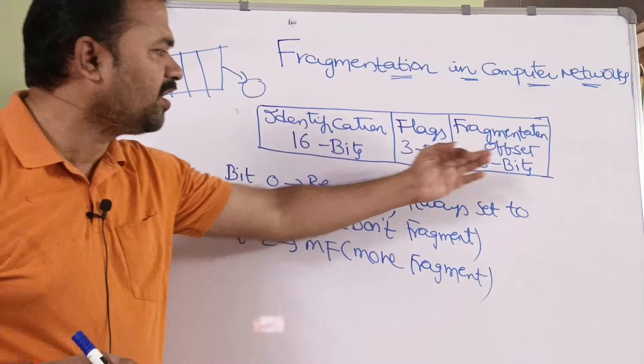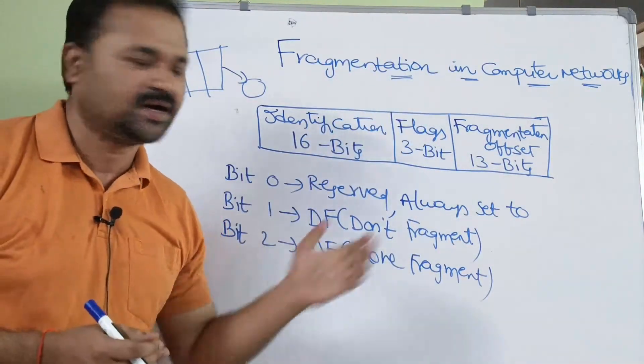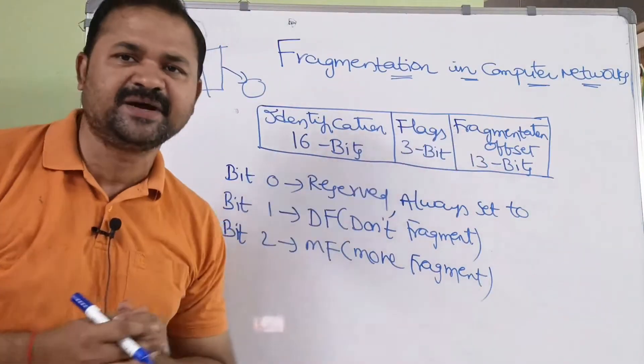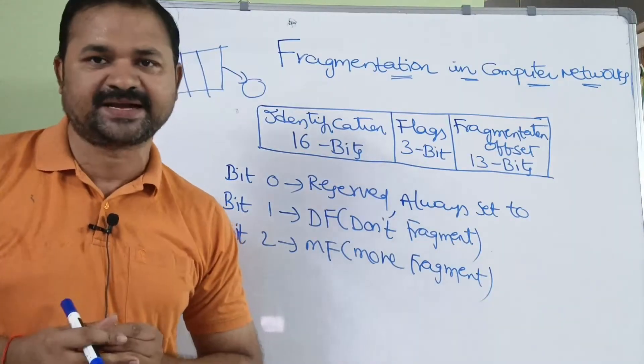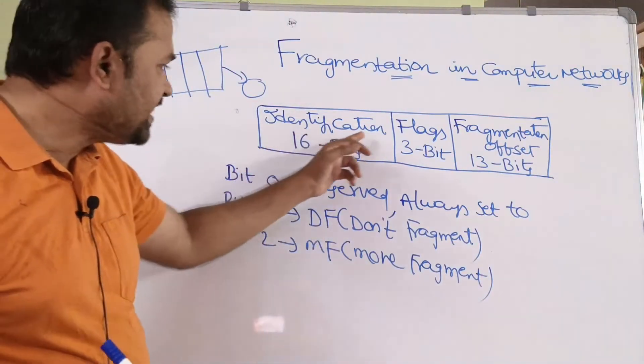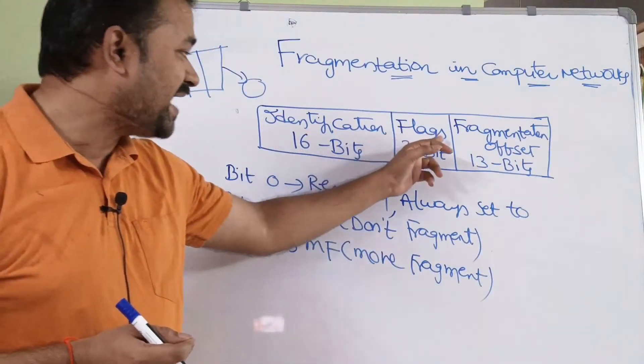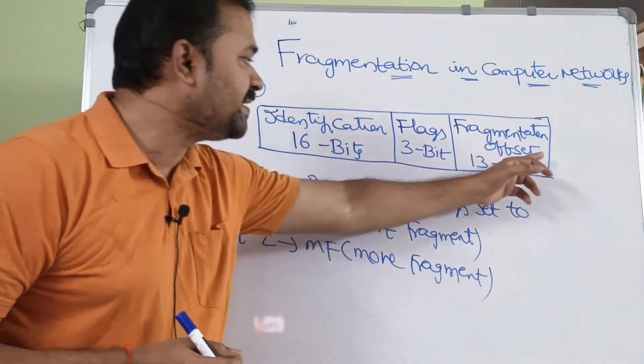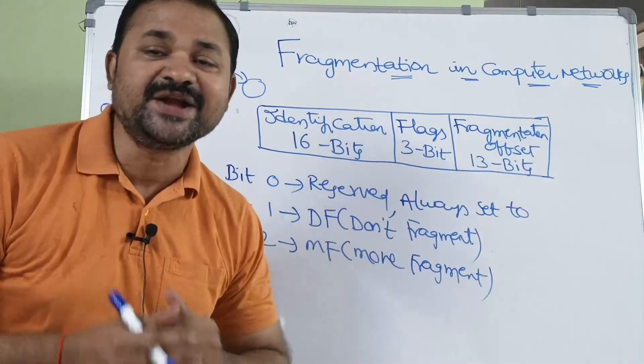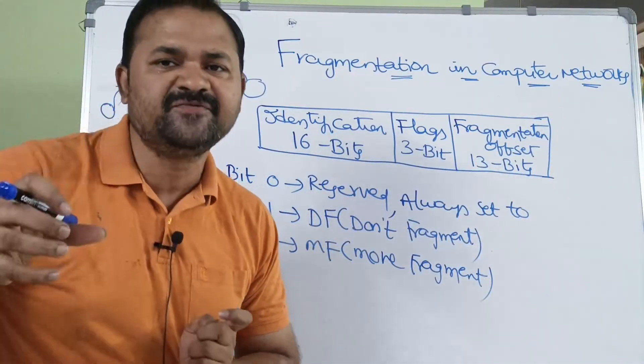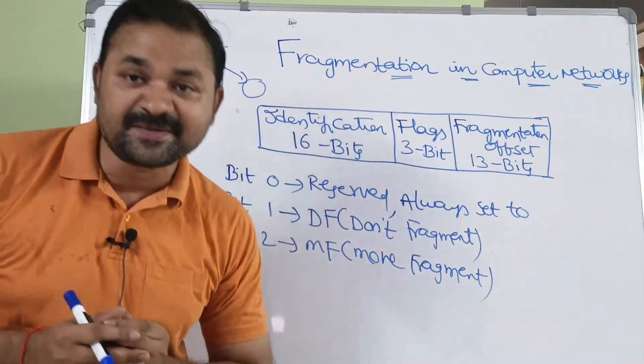These three are the fields related to fragmentation. These fields are nothing but the second row of the IPv4 header format: identification field which is of size 16 bits, flags 3 bits, fragmentation offset 13 bits. These three fields are related to fragmentation.